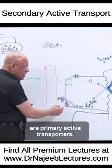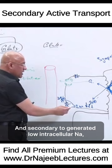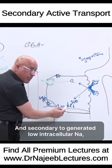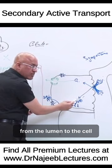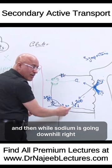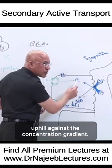Sodium-potassium ATPases are primary active transporters. Secondary to the low intracellular sodium they generate, SGLT moves sodium down the concentration gradient from the lumen to the cell. While sodium is going downhill, that releases energy which is utilized to take the luminal glucose uphill against the concentration gradient.